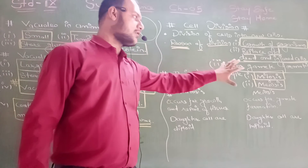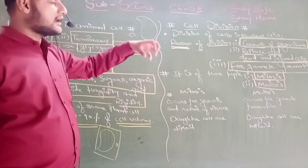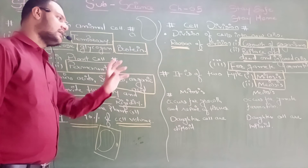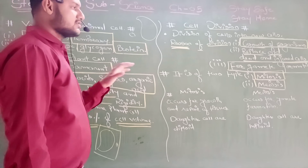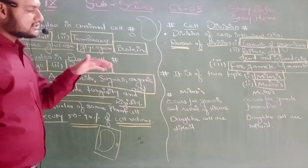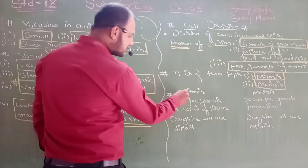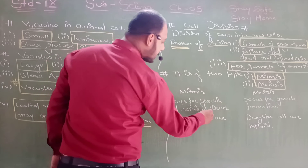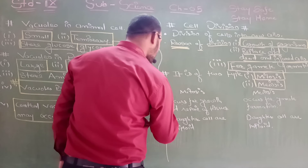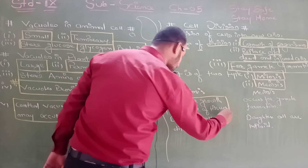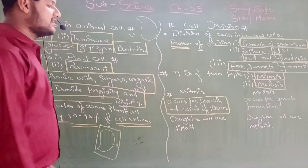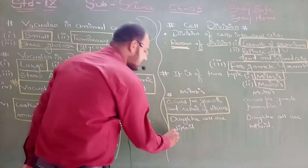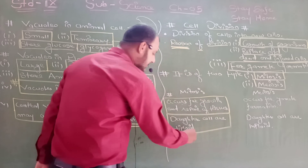In your book, whatever is given, I am writing it on the board in point form so you can remember it easily. Two types of cell division occur: mitosis and meiosis. Mitosis occurs for the growth and repair of tissues — this is a very important point, please note it down.